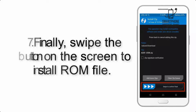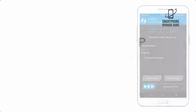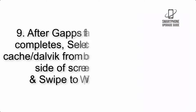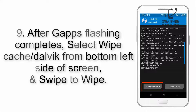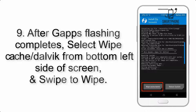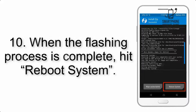Step 7: Swipe the button on the screen to install the ROM file. Step 8: Flash the GApps zip package in the same manner. Step 9: After GApps flashing completes, select Wipe Cache and Dalvik from the bottom left side of the screen and swipe to wipe.